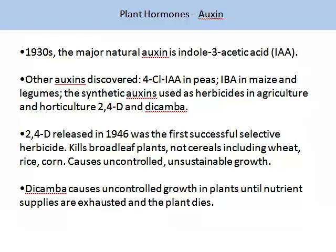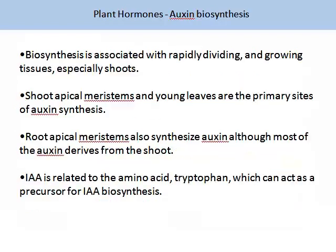Dicamba causes uncontrolled growth in plants until nutrient supplies are exhausted and then the plant dies. The biosynthesis of auxin is often associated with rapidly dividing and growing tissues, especially in shoots. The shoot apical meristem, or SAM, and young leaves are the primary sites of auxin synthesis. Root apical meristem, or RAM, also synthesizes auxin, although most of the auxin derives from the shoot. IAA is related to the amino acid tryptophan, which can act as a precursor for IAA biosynthesis.